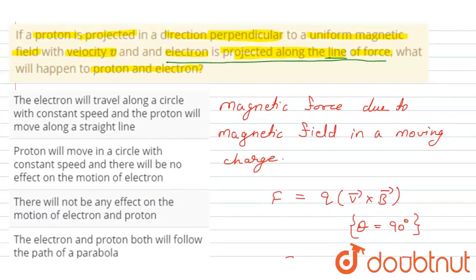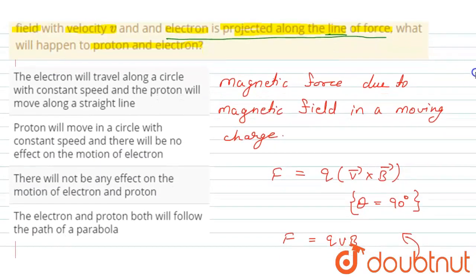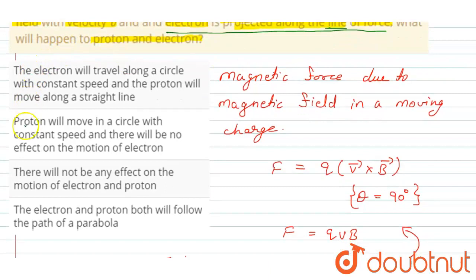So here we find that option B is true: proton will move in a circle with constant speed and there will be no effect on the motion of electron. So here this statement is true.